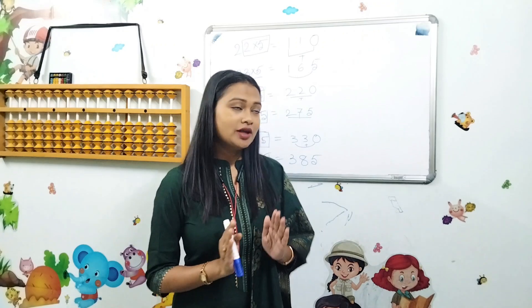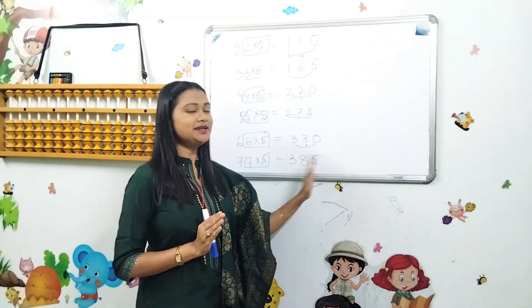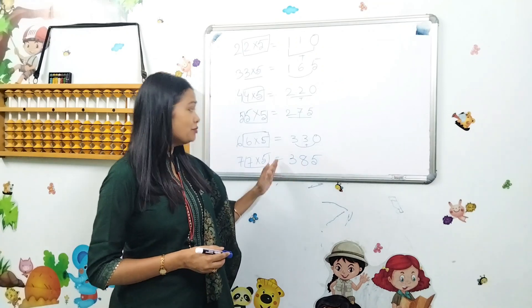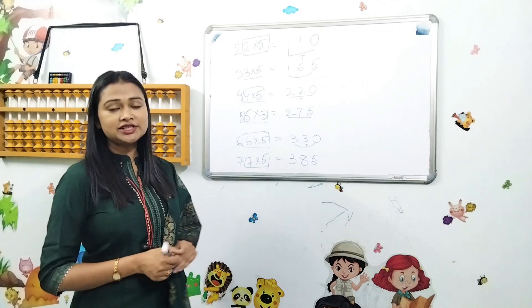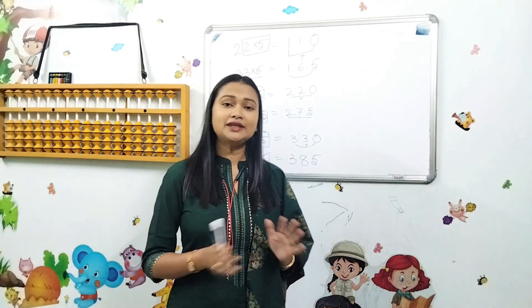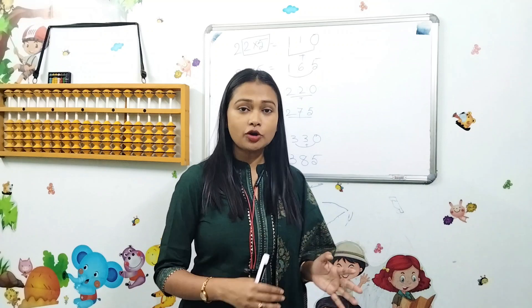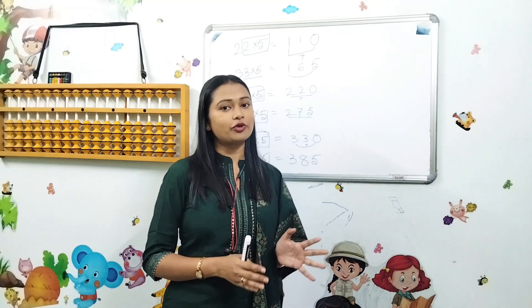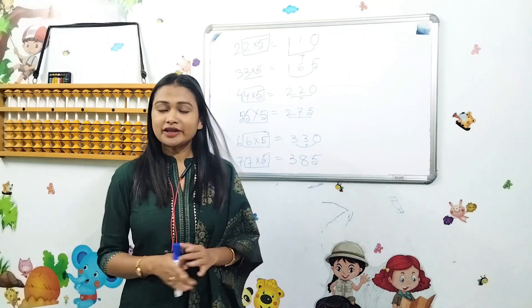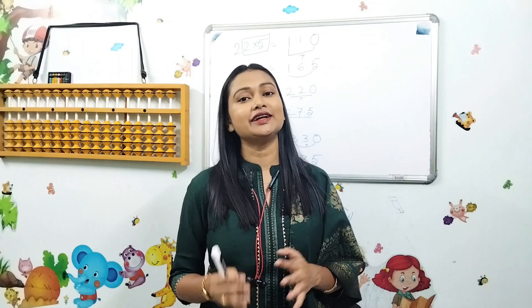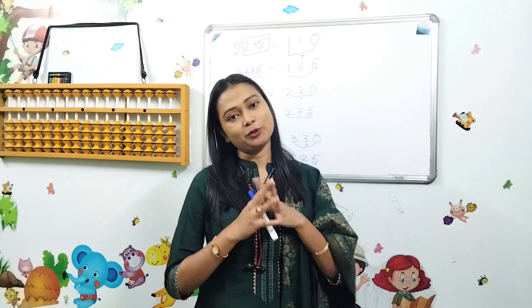So if you normally do the multiplication in the table, you will see the answer is right. We will do it in 30 seconds. We have done 77 into 5, 88 into 5, 99 into 5. If you have any questions, please comment and I will try to solve the problem. Please like this video and subscribe to learn more about this channel. Namaskar!